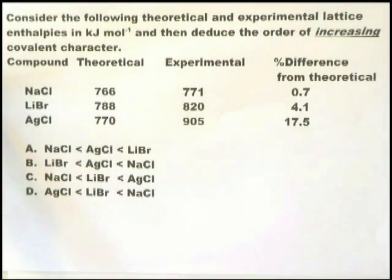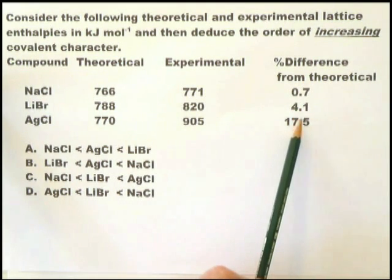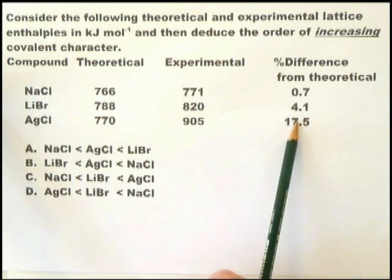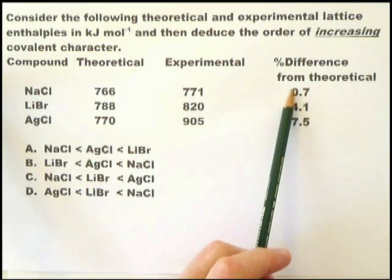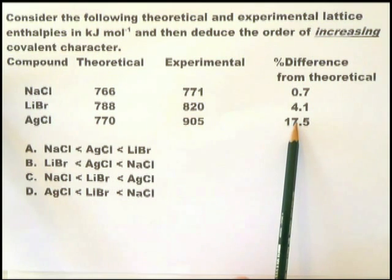Here we have another question referring to the Born-Haber cycle, and yet it's a completely different question from all the previous ones. We're comparing the theoretical lattice energy and the experimental lattice energy in order to determine covalent character. The theoretical lattice energy is calculated from electrostatic principles and based on a purely ionic model for the compound concerned. The percentage difference from the theoretical is an indication of covalent character. And clearly, AgCl has a higher covalent character than NaCl. Or you could say it the other way around, NaCl has higher ionic character than AgCl. Two different ways of looking at it, from the ionic character side or the covalent character side.